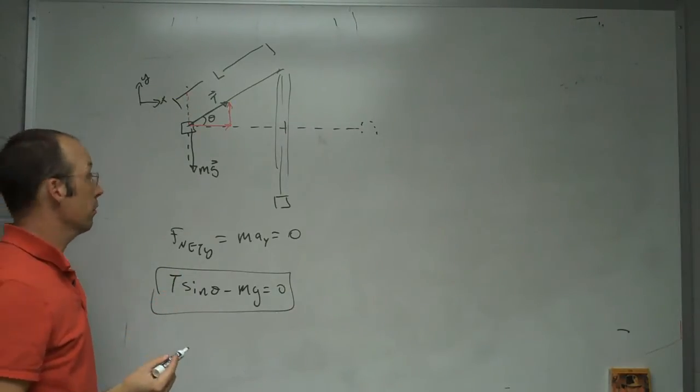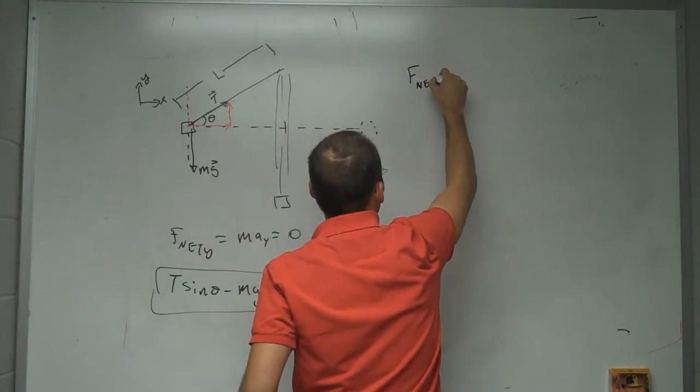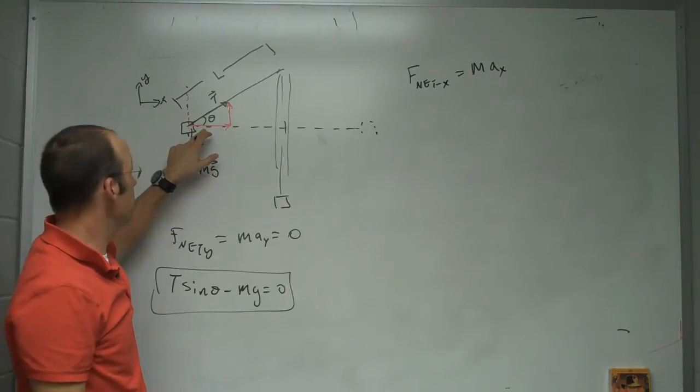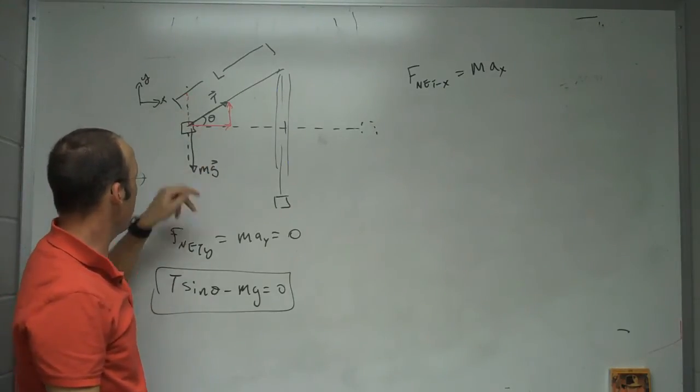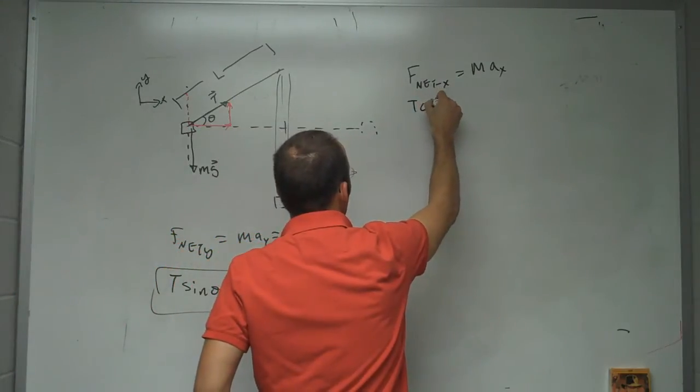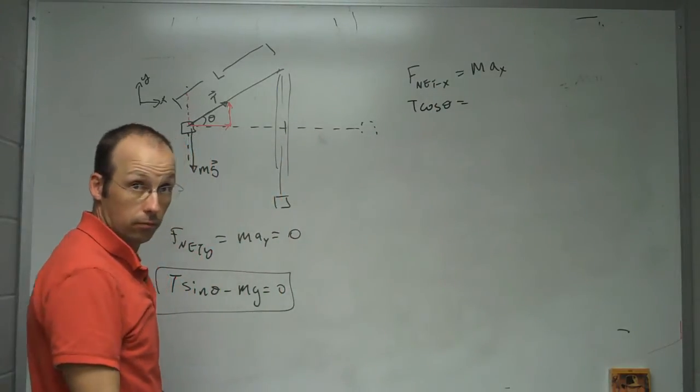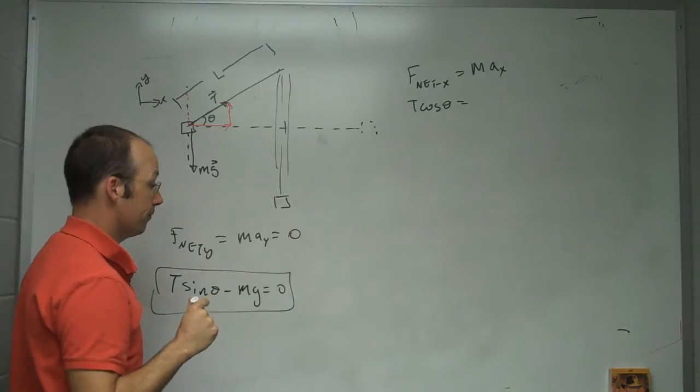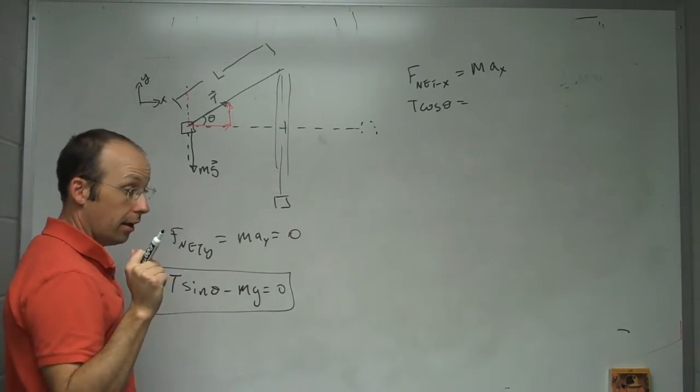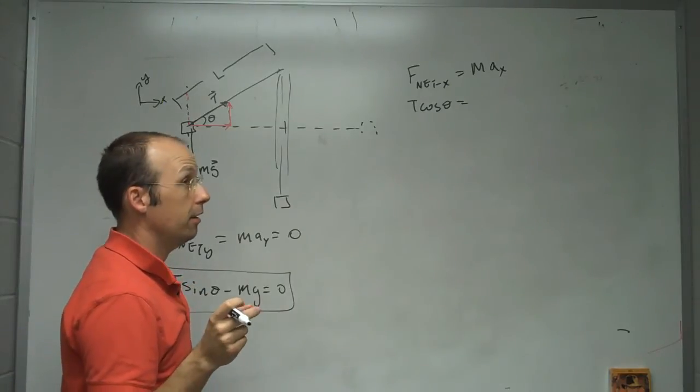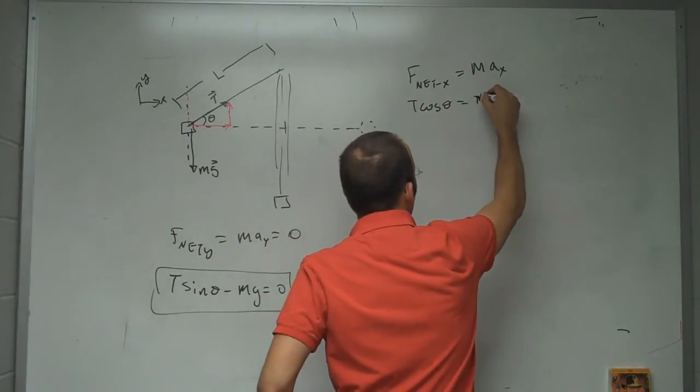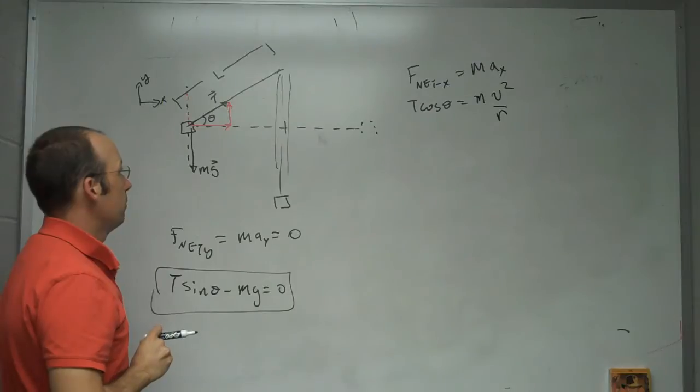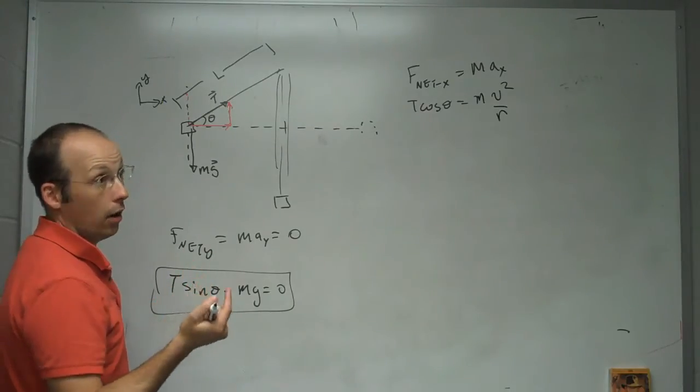Now, what about the horizontal direction? I can say f net x equals m a x. So, in the x direction, what forces do I have? At this particular instance, I just have a component of the tension force. Looking at this right triangle here, it's the adjacent side. So, that's going to be T cosine theta. Is the acceleration zero? No. When an object moves in a circle, it has an acceleration, and the direction is towards the center of the circle. So, it has an acceleration that way. The magnitude of an acceleration for something moving in a circle at a constant speed is velocity squared over the radius of the circle. So, this is going to be m v squared over r.